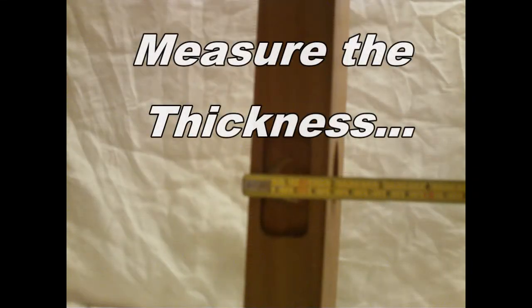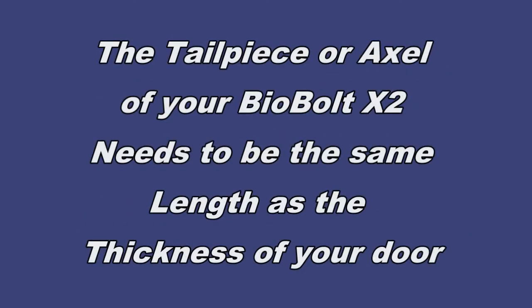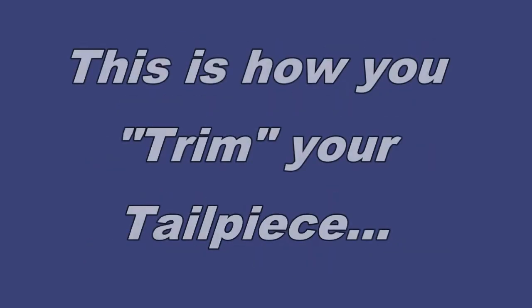It's a US standard prep door. Measure the thickness. Most US doors are between one and three quarters and two inches thick. The tailpiece or axle of your Biobolt X2 needs to be the same length as the thickness of your door.